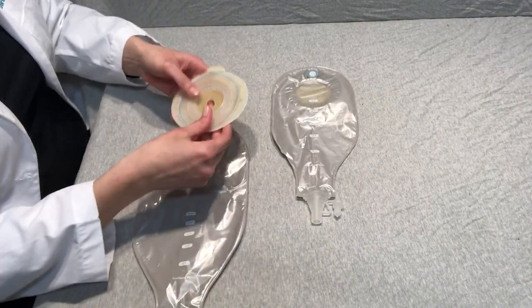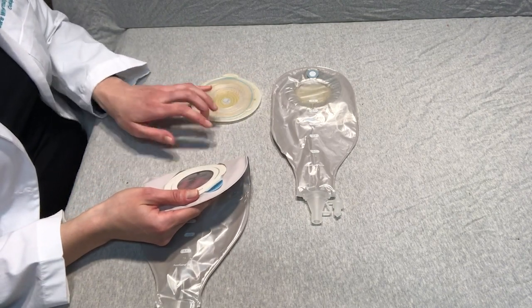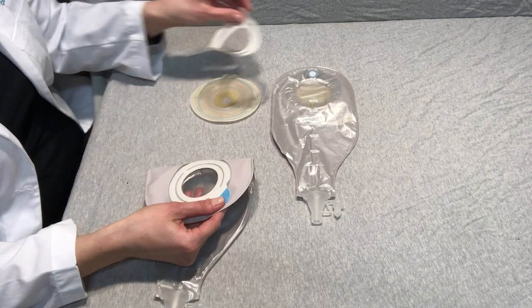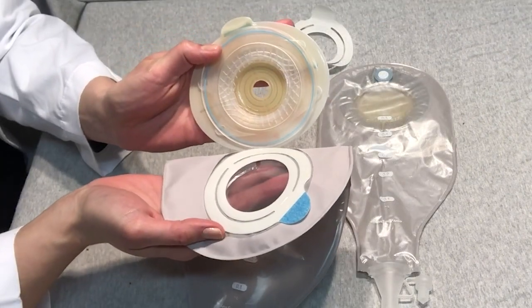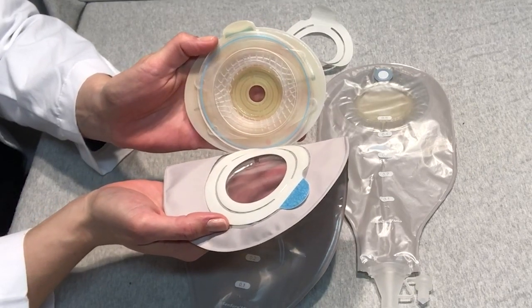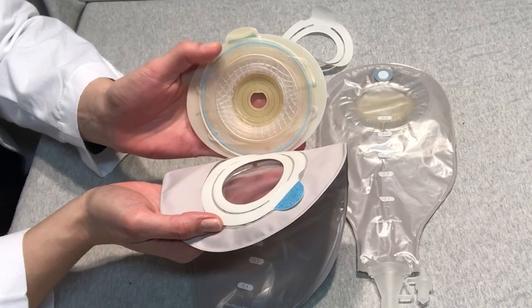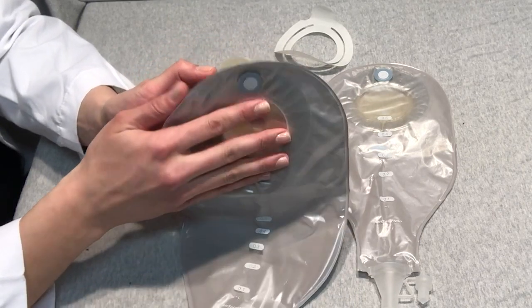As far as applying the pouch to this flex barrier. After this is completely prepared and cut out to fit the patient, I'm going to peel off the backing here. You're going to line up the bottom of this pouch with the circular blue line on the landing zone. This landing zone has to be clean and dry prior to applying and doing this step. And you're going to apply.